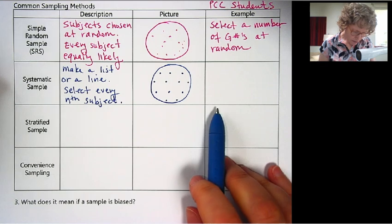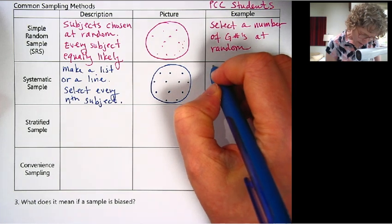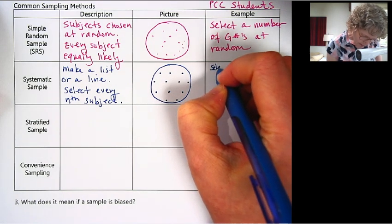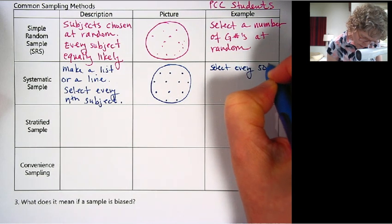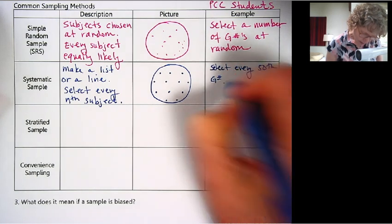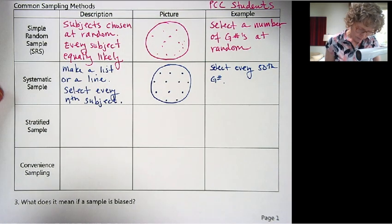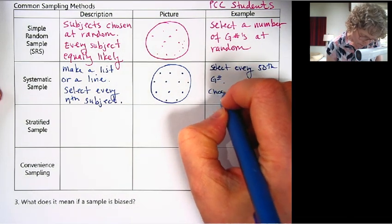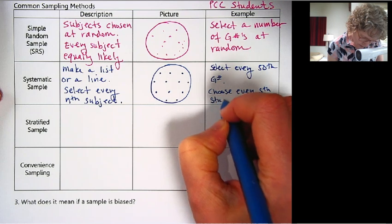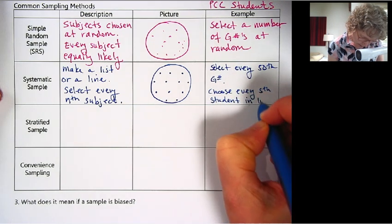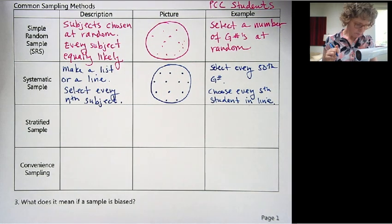So in our example of PCC students, we could write a few of those that I selected. So we could do it by G number. We could select every 50th G number. We can do that because they're in numerical order. So that would work pretty well. Or we could choose every fifth student in line for something. Those are some examples of how to use systematic.